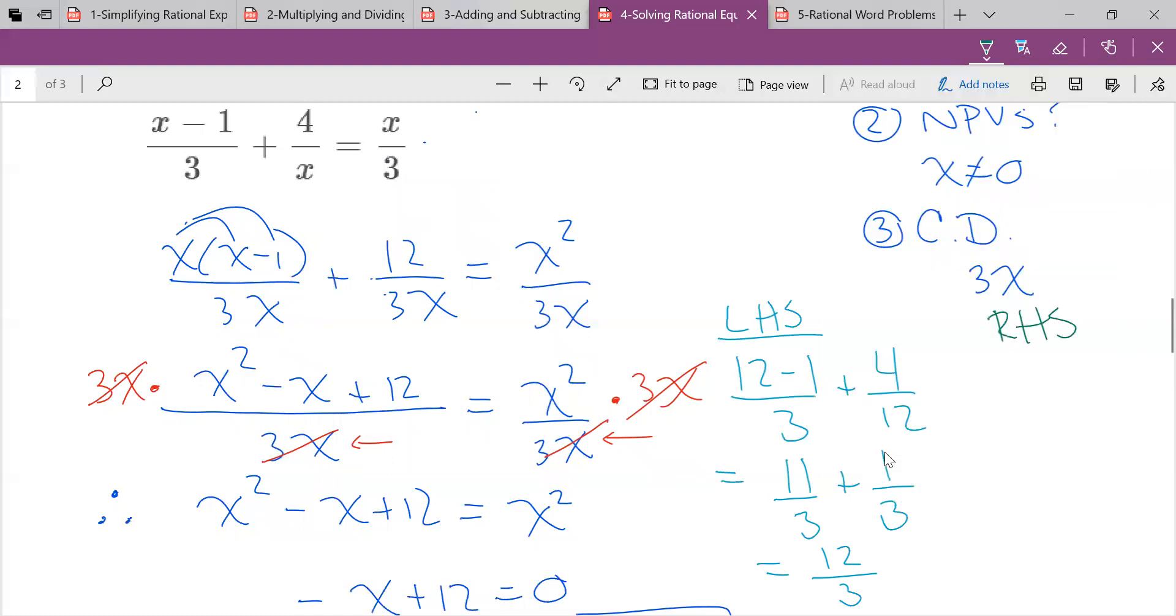Notice how I check them separately. I don't make them equal to each other at the beginning. 12 over 3. Hey, done. I've done the question right. Okay.